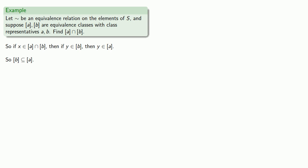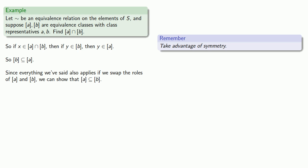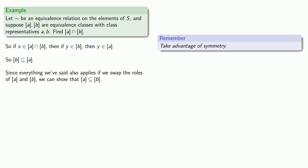It's useful at this point to take advantage of symmetry. Since everything we've said also applies if we swap the roles of the equivalence classes of A and B, we can show the equivalence class of A is a subset of the equivalence class of B. And so if A is a subset of B and B is a subset of A, then the two sets must, in fact, be equal.